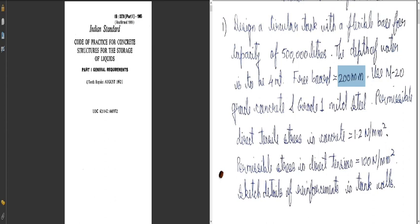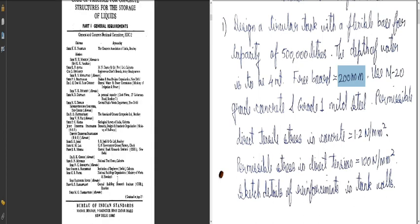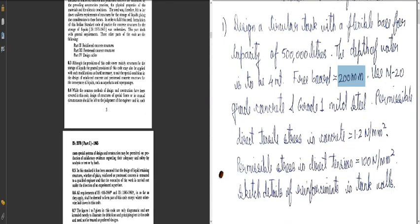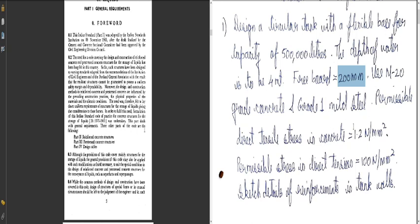Let us refer to the code book. IS 3370 Part 1 is the Indian Standard code of practice for concrete structures for the storage of liquids — general requirements. The other parts are: Part 2 — reinforced concrete structures, Part 3 — pre-stressed concrete structures, and Part 4 — design tables. As per the syllabus, design of water tanks is to be done as per IS 3370 Part 4, which gives the design tables we must use.